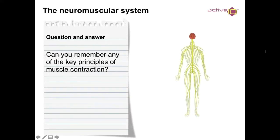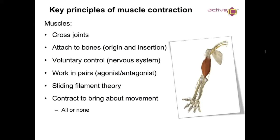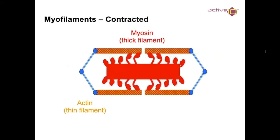Now, can you remember any of the key principles of muscular contraction from the sliding filament theory? The key principles are: muscles cross joints and are attached to bones via origins and insertions; they're under voluntary control by the nervous system; they work in pairs — agonist and antagonist; and we looked at the sliding filament theory. They contract to bring about movement, and we'll look at the all-or-nothing law. Here you can see the motor filaments relaxed versus contracted.